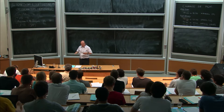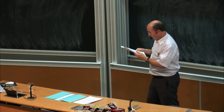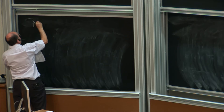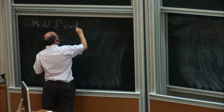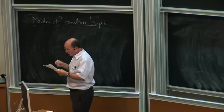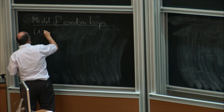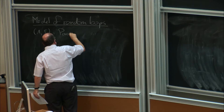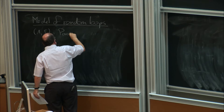I'd like to first start with defining the model of random loops. Once we understand what it is, I'll state a precise equivalence between quantum systems and those random loop models. The model works for an arbitrary finite graph. So as before, we have the graph lambda with a set of edges, and we have two parameters. One is beta, which represents the inverse temperature as we will see, but here it's just a parameter.